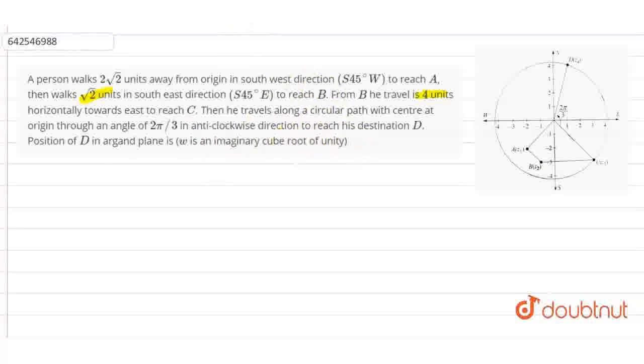So let's start with this question. Z1 is considered to be 2 root 2 e to the i 3 pi by 4, which is equal to minus 2 minus 2 iota. So now,